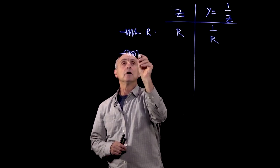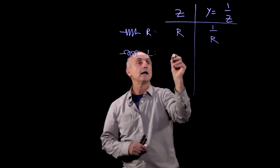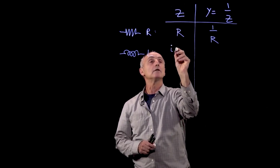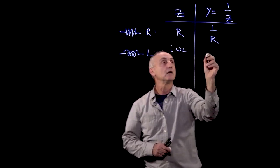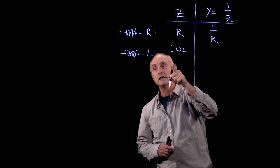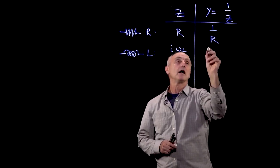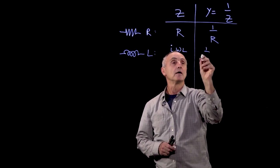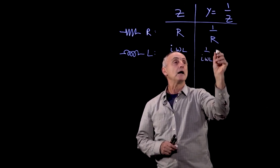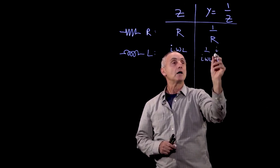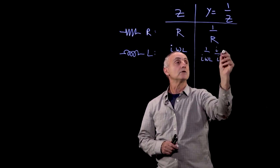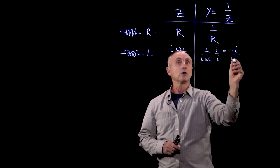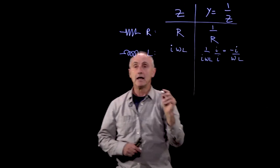We had an inductor element L, and the impedance was i times omega L. When you invert that, if we had an i downstairs and you multiply downstairs and upstairs by i, i squared is minus one, so this becomes minus i over omega L.